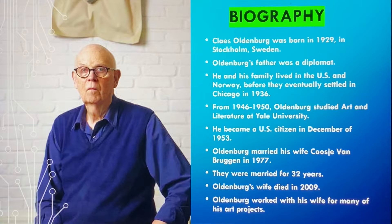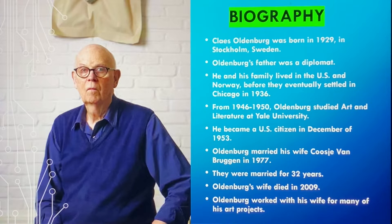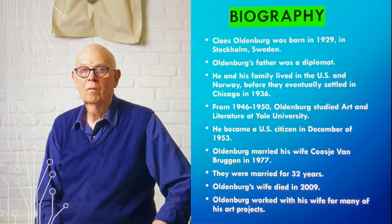He was originally born in Stockholm, Sweden in 1929. His father was a diplomat, and he and his family moved to the US and Norway, eventually settling in Chicago in 1936. From 1946 to 1950, Oldenburg studied art and literature at Yale University and became a US citizen in December of 1953. He married his wife, Coosje van Bruggen, in 1977 and they were married for 32 years. His wife died in 2009.